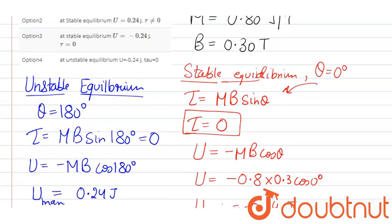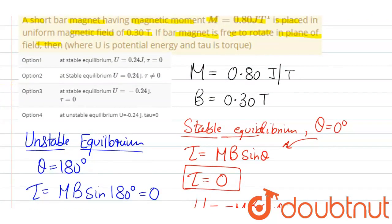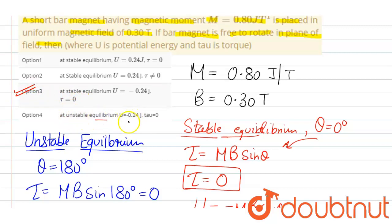Let's find the correct option. Option 1 states stable equilibrium with U equals 2.24 and torque equals 0 — this is not correct because U should be negative. Option 2 states U equals 0.24 and torque is not 0 — also incorrect. Option 3 states stable equilibrium with U equals minus 0.24 joules and torque equals 0 — yes, this option is correct. At unstable equilibrium U is positive, not negative, so option 3 is the correct answer. I hope that answers your question.